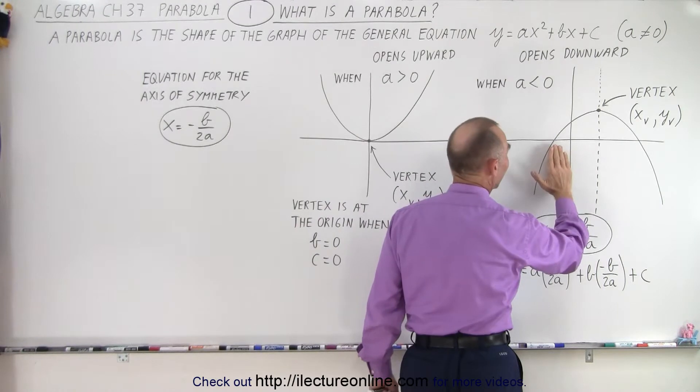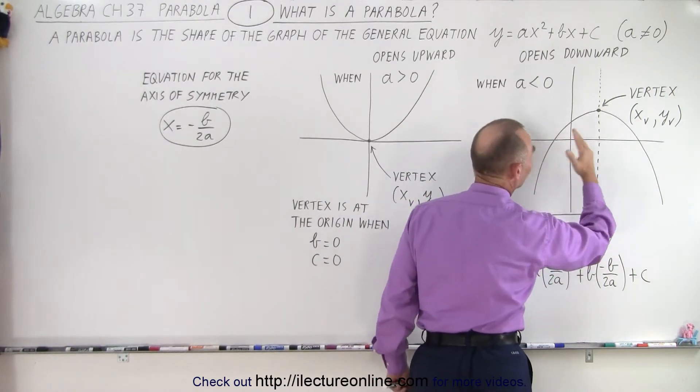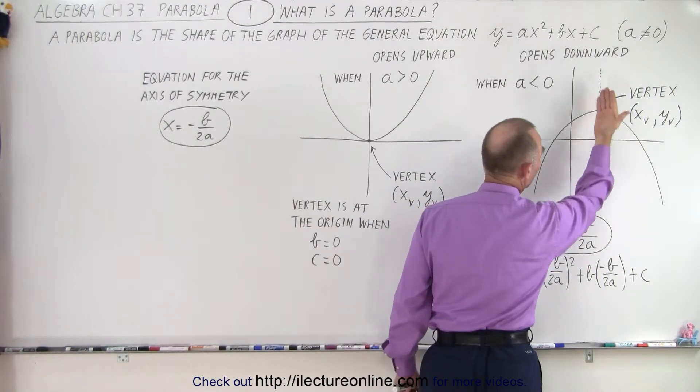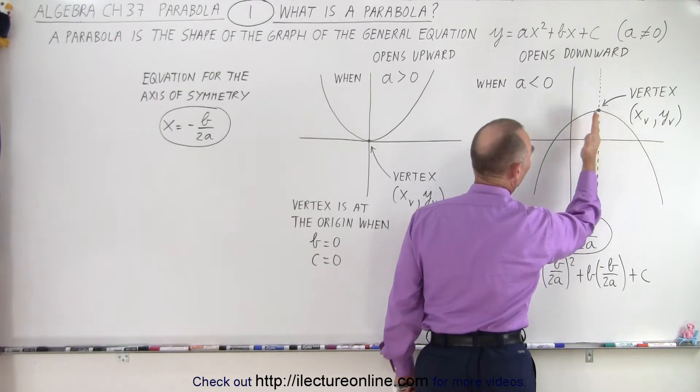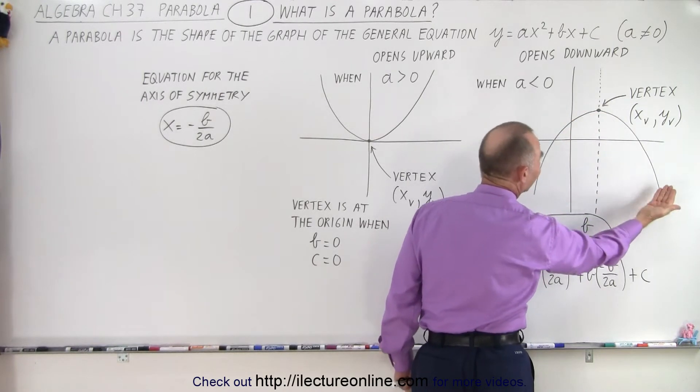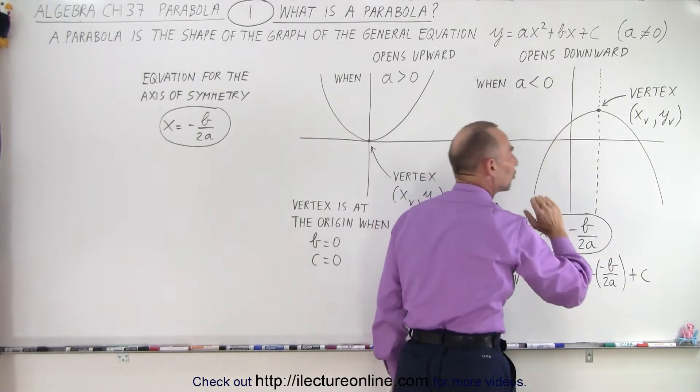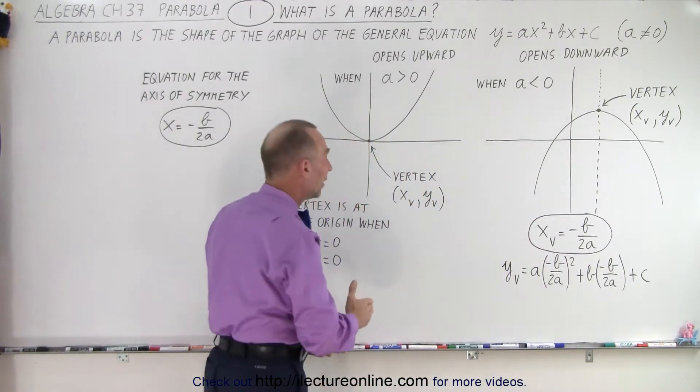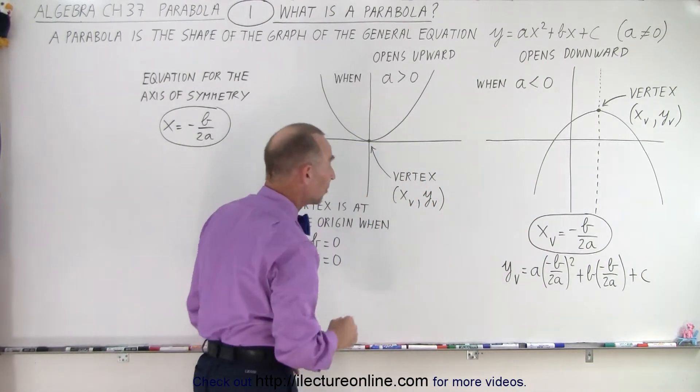In other words, the left side and the right side of the graph look exactly the same. If you were to take this on a piece of paper and you were to fold it over, this would exactly land on the other side. So this perfect symmetry of the left side and the right side, we have what we call the axis of symmetry.